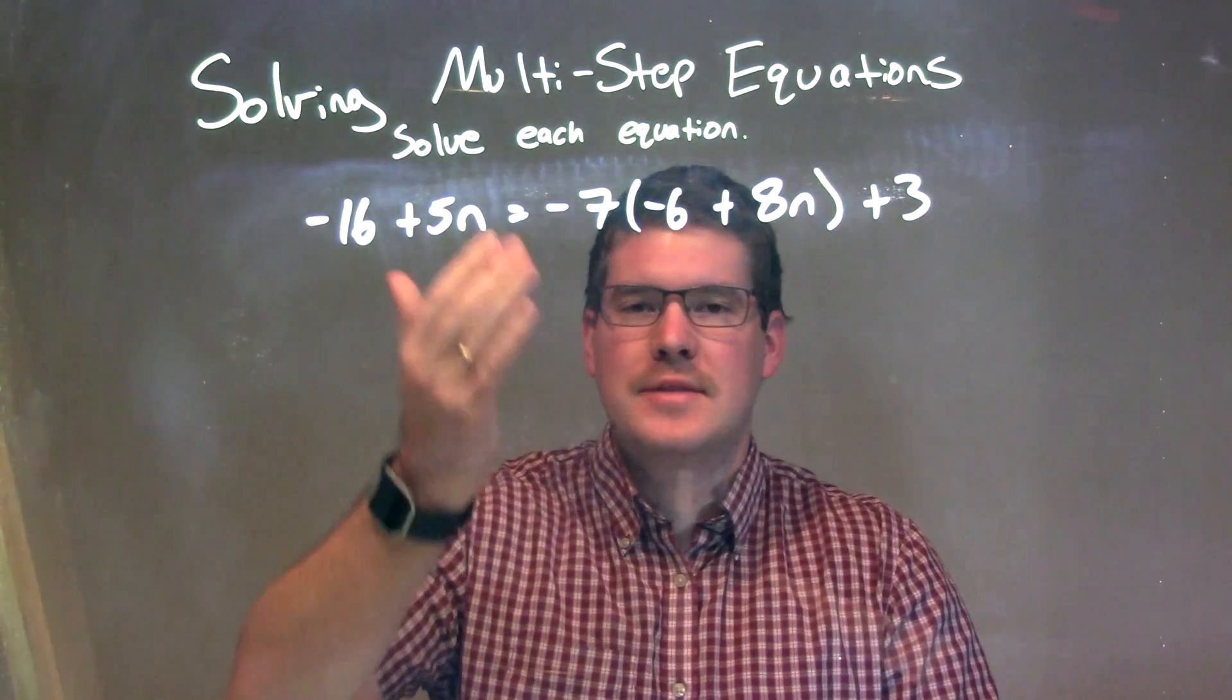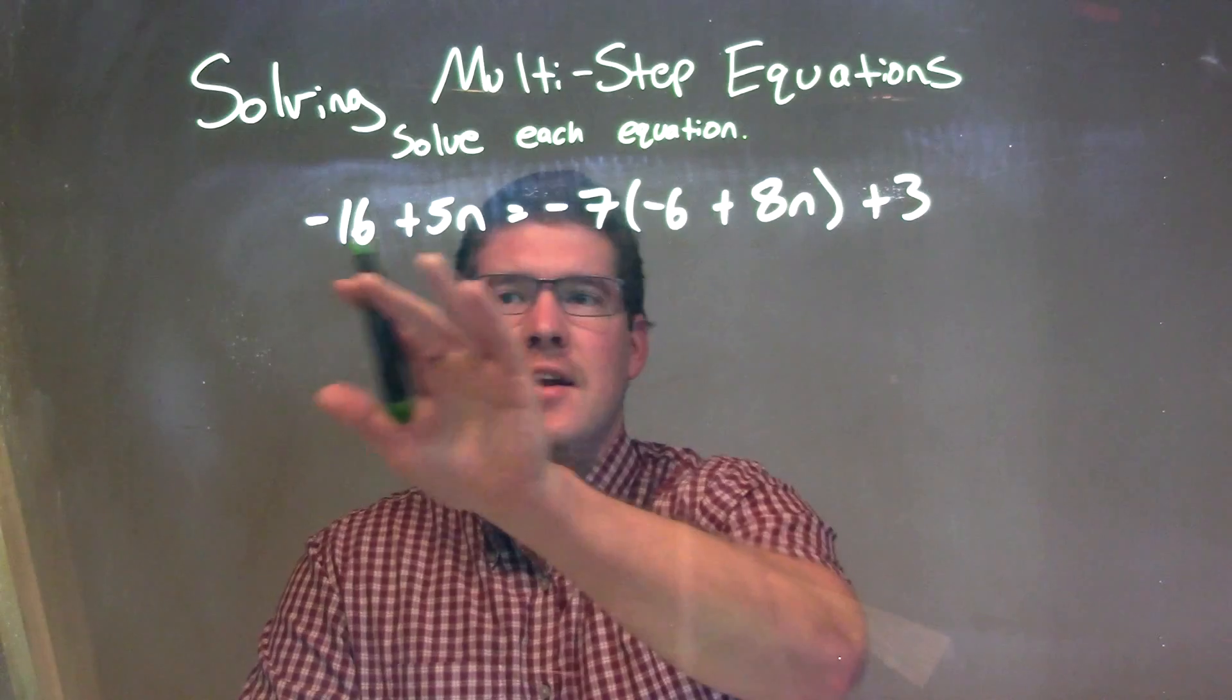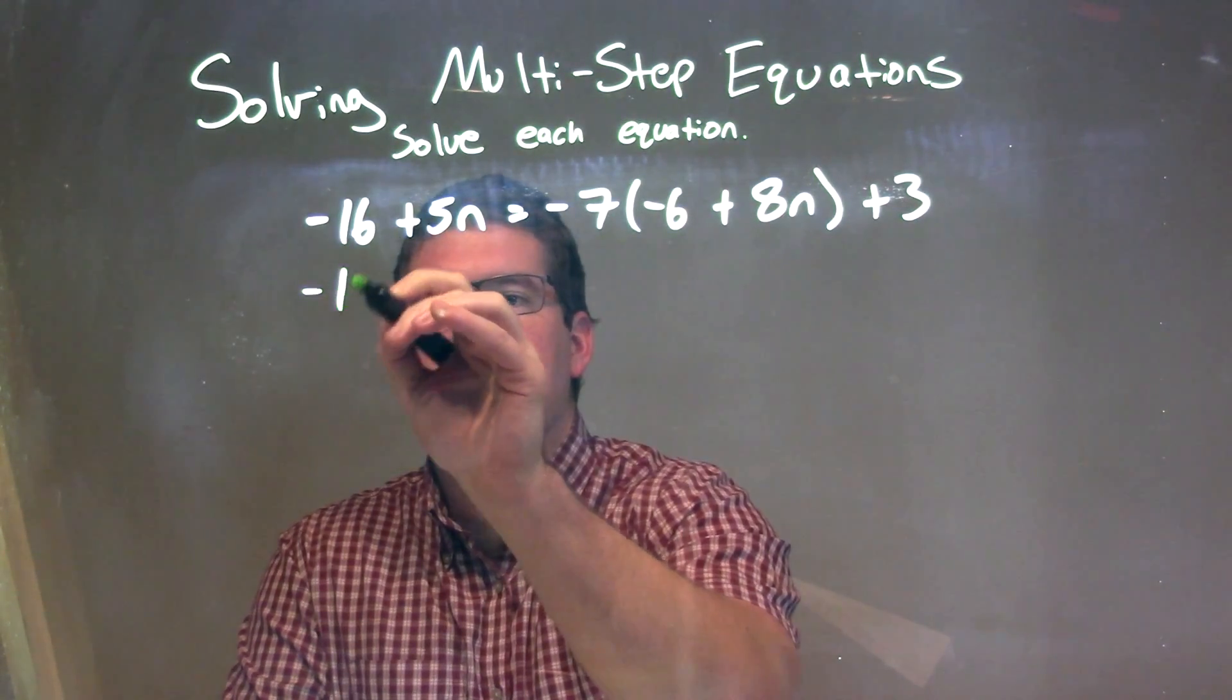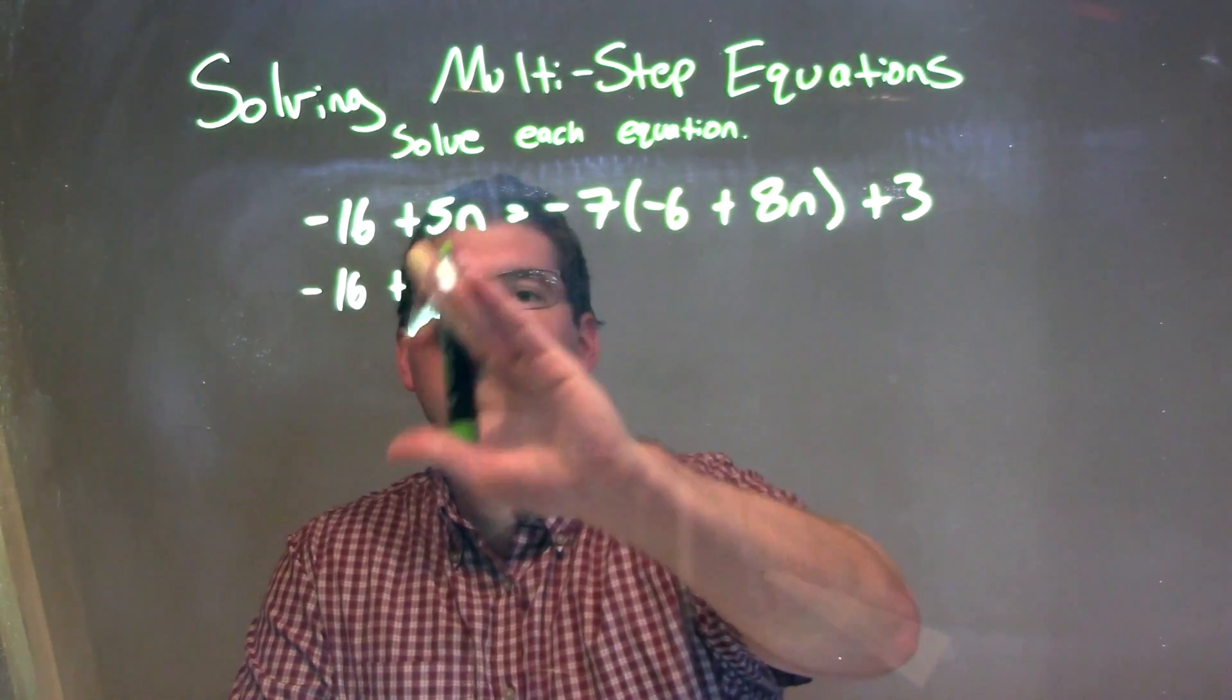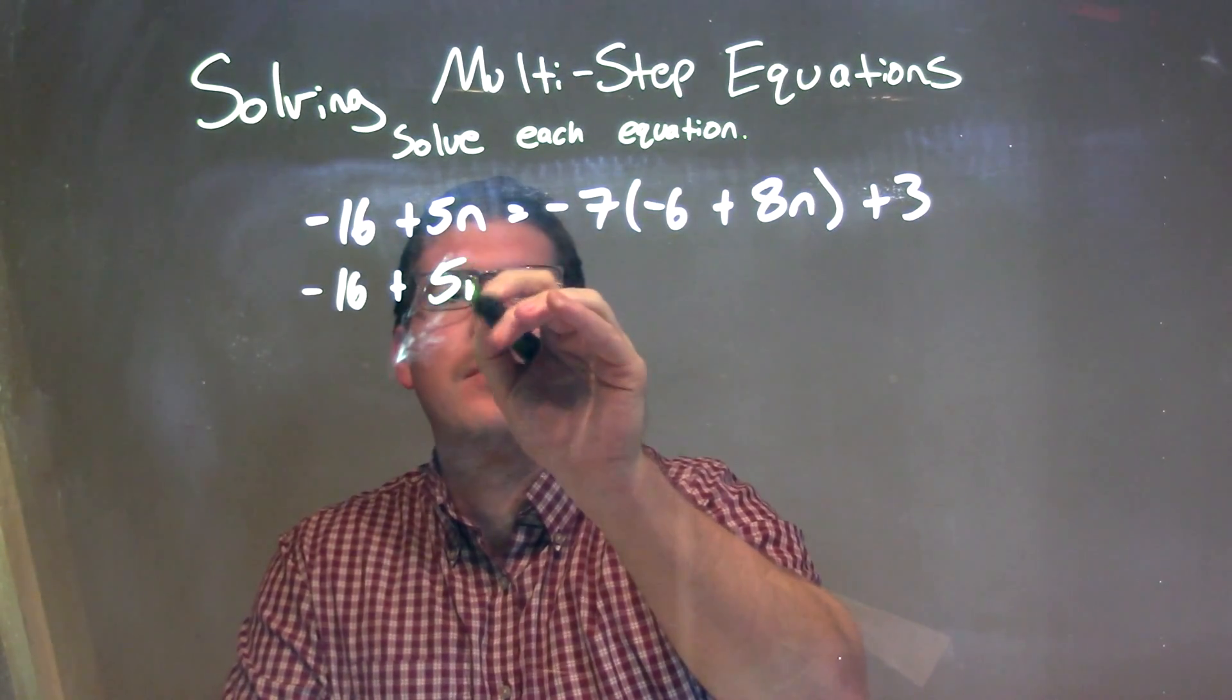What I want to do here is simplify on either side of the equation first. The left-hand side, nothing I can simplify, so I'm going to bring that down: negative 16 plus 5n.